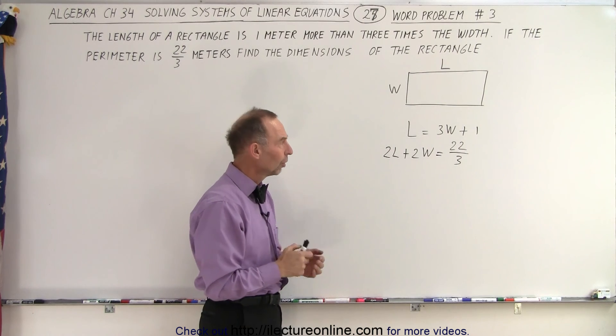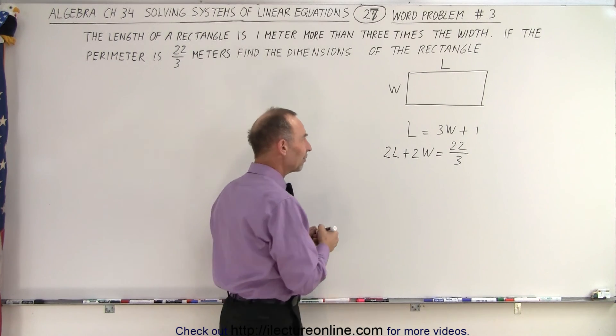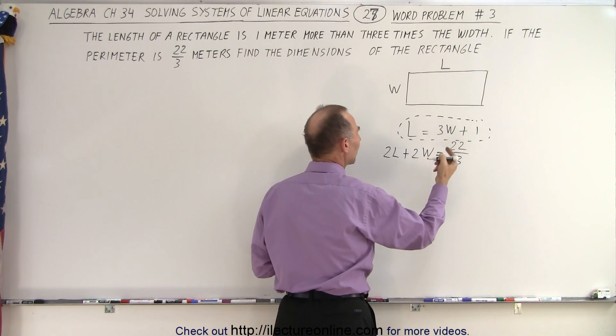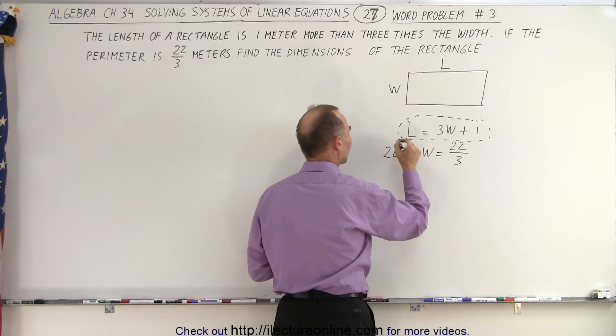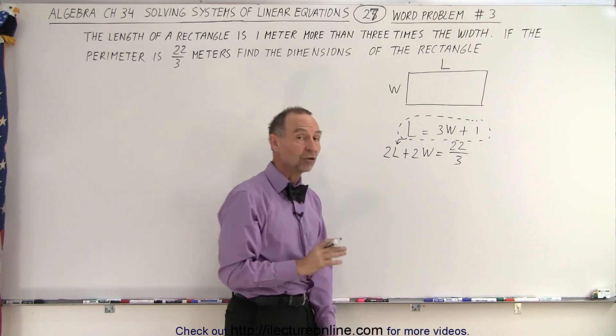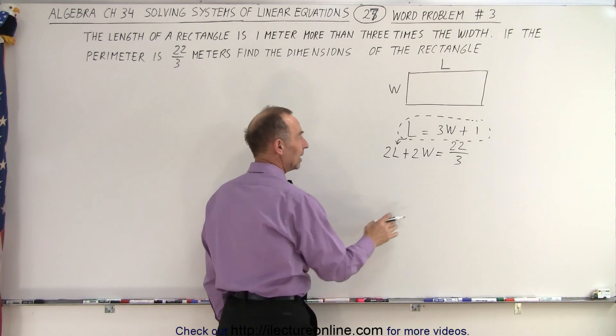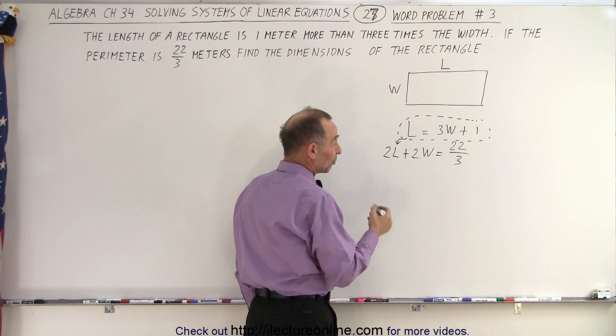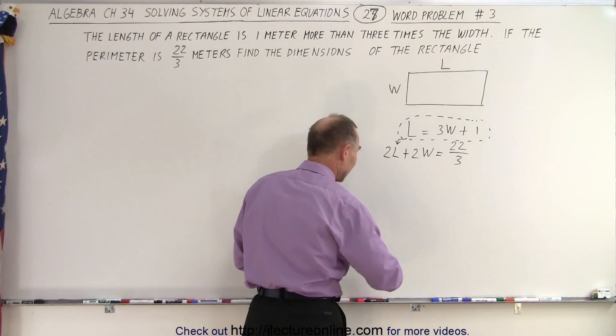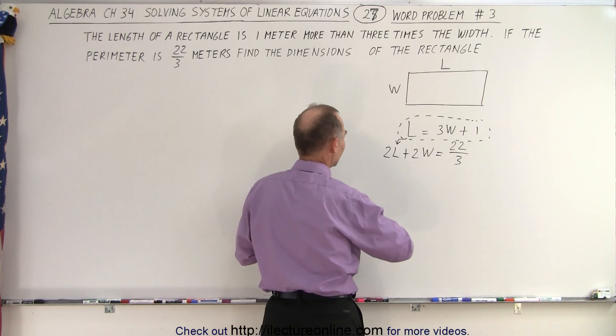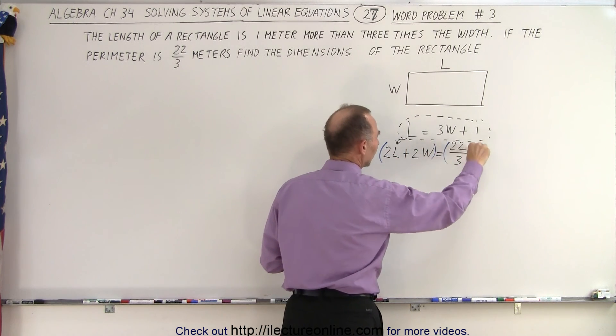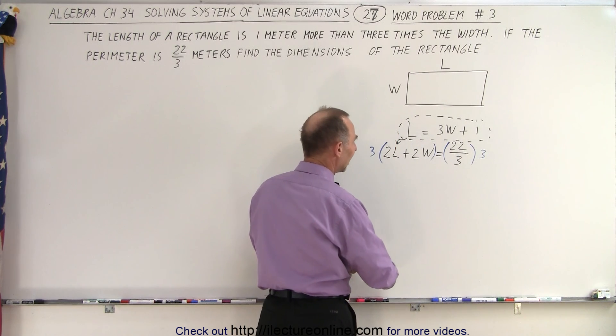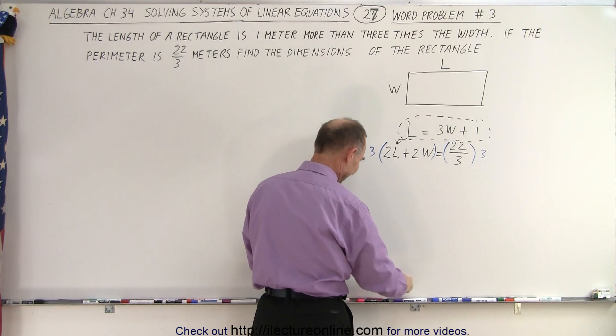So what method should we use? Well, the fact that we have our first equation already one variable in terms of the other variable, we can simply use the method of substitution by plugging what L is equal to into our second equation, thus eliminating L. I do have a fraction there, so maybe first what I want to do is multiply both sides of the second equation by 3 to get rid of that fraction. And then we'll substitute the first equation into the second equation.